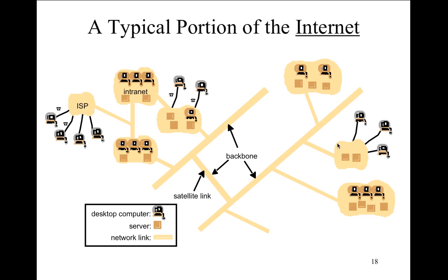The typical internet diagram shows ISPs connected to intranets and clients — desktop computers, servers, network lines, backbone connections, and satellite links all put together. The incorporation of VoIP is an interesting technology: if this network already exists and you can get to any location in the world, why not put telephone communications over it? Voice over IP means running voice over internet data protocol.